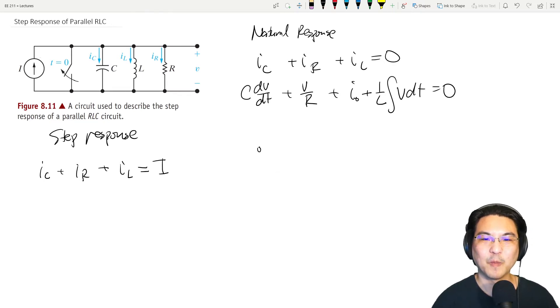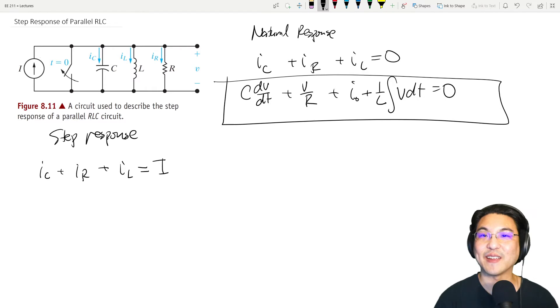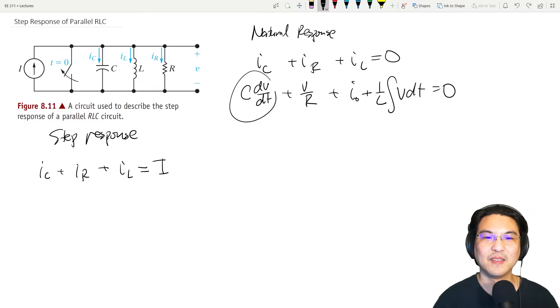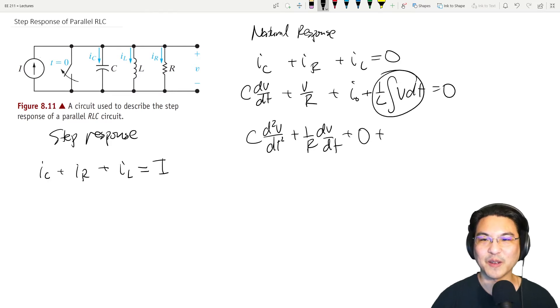So I would like to not have this integral over here. So the trick is we take a time derivative of the entire equation. So then this turns into C d squared, the second derivative. And then this is dV/dt. The time derivative of a constant is zero. And then the derivative of an integral, those are inverses, right? V/L.